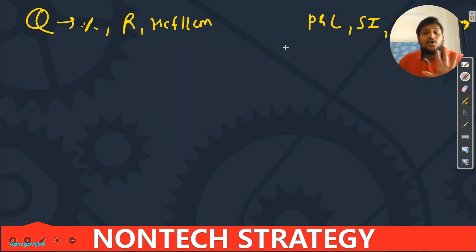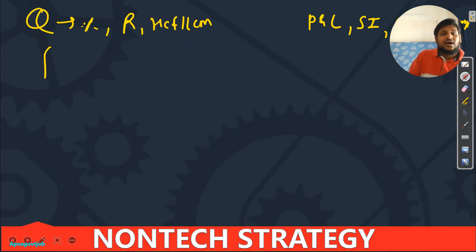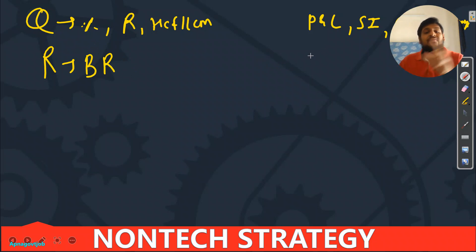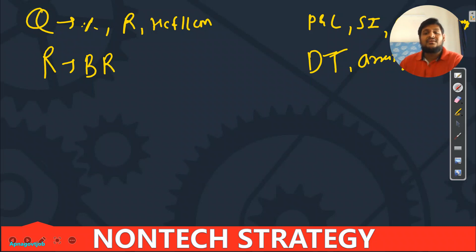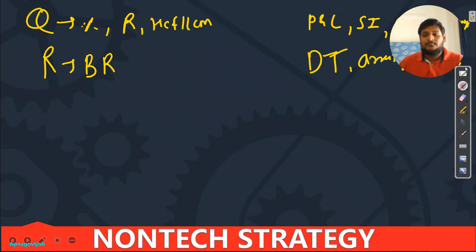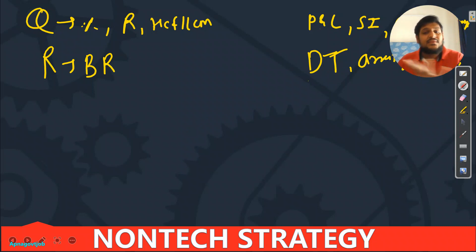For non-technical, I hope you are practicing the daily Telegram PDF. If not, join our Apna Government Job Telegram channel where you get daily PDFs for all sections. For Reasoning: in phase 1 I only covered Blood Relations. In phase 2, start with Direction Test, then Arrangement — covering linear and circular types. After arrangement, move to non-verbal reasoning.